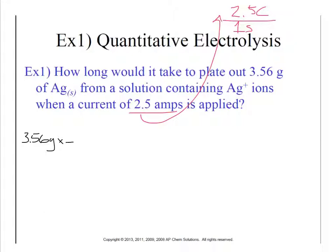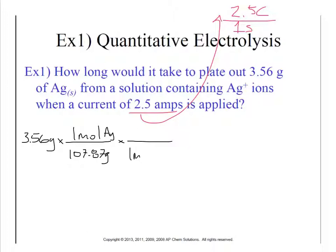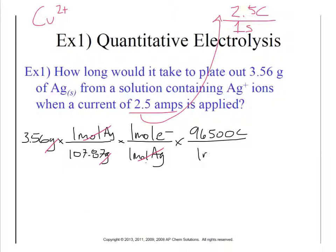From grams, we convert to moles using the molar mass of silver: 107.87 g per mole. To generate one mole of silver, we need one mole of electrons — because Ag⁺ needs one electron to become Ag solid. Then we use Faraday's constant: 96,500 coulombs per mole of electrons. That converts moles of electrons to coulombs. As a side note, if we were refining Cu²⁺, it would be two moles of electrons per mole of copper.